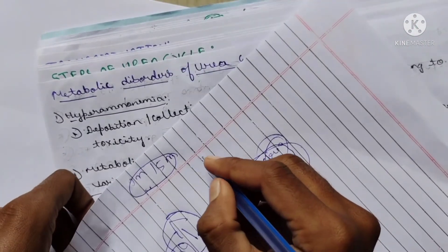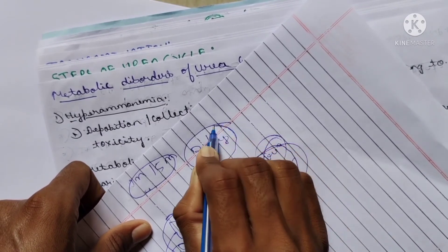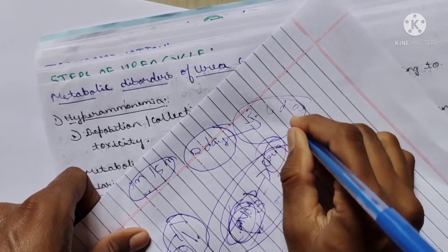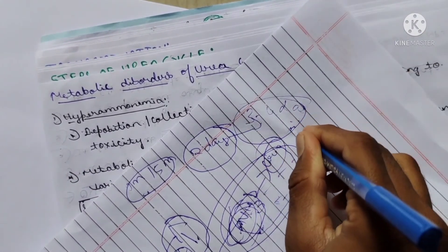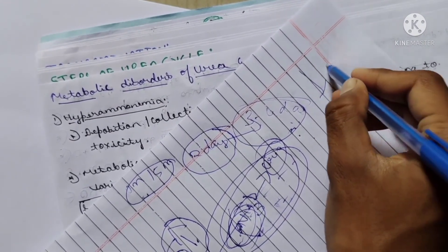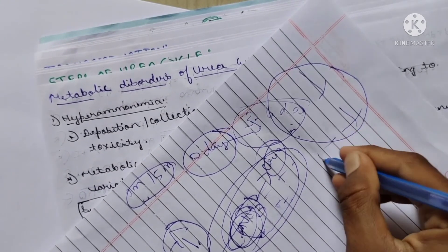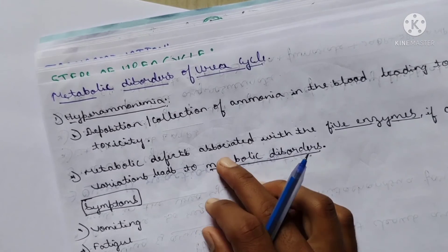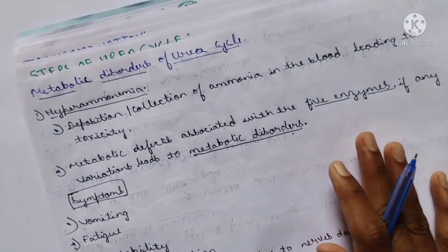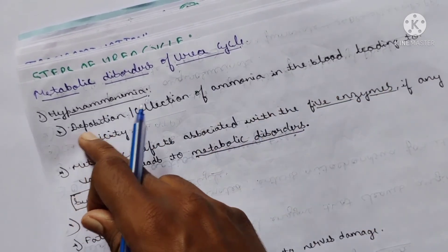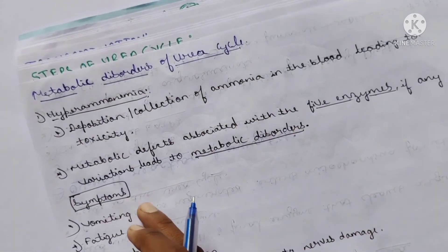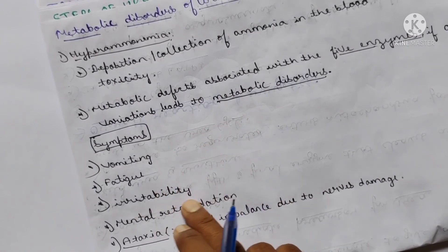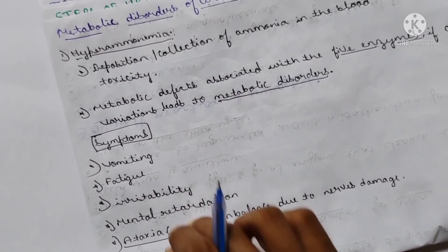If ammonia is not excreted as urea through urine continuously for two days, death of the patient can occur by the third or fourth day due to continuous ammonia deposition. Ammonia destroys all the organs of the human body - mainly the kidneys, liver, heart, and brain. Hyperammonemia is mainly due to defects in the urea cycle enzymes.